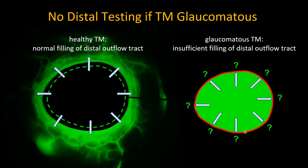That would work with a healthy trabecular meshwork. But in a glaucoma patient, in an extreme form the trabecular meshwork is very impermeable. If it is non-permeable or very poorly permeable, the dye could not exit the anterior chamber efficiently and one could not study flow speeds and distribution meaningfully. One could not distinguish between a blockage at the trabecular meshwork level versus increased resistance in the collective channels or at the orifices, where there can be small valves.